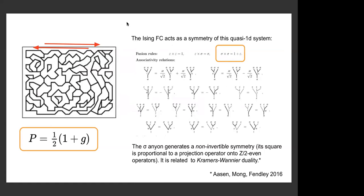The sigma fusion rule has to do with Kramers-Wannier duality. The sigma squared equals one plus epsilon fusion rule relates to the fact that sigma defines something like a projector. You can think about the torus partition function — using the rules for making a small loop of the sigma string and dividing by the quantum dimension (which in this case is square root two), then bringing the string around the back of the torus and fusing it with itself.